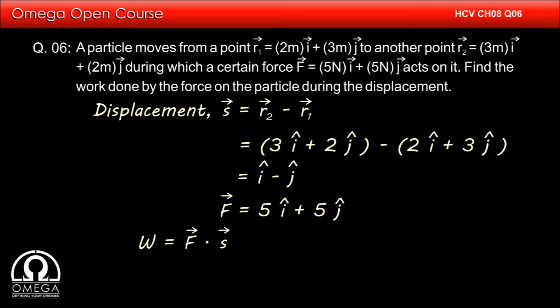We know that work is given by F · s. Therefore, the work is (5i + 5j) · (i - j) = 5 - 5 = 0. This is our answer.